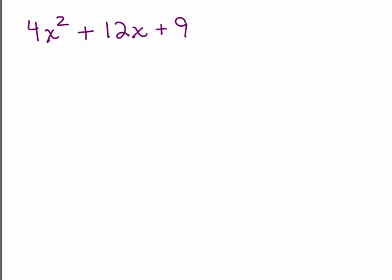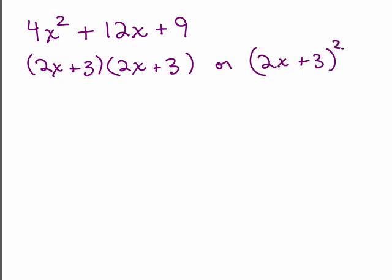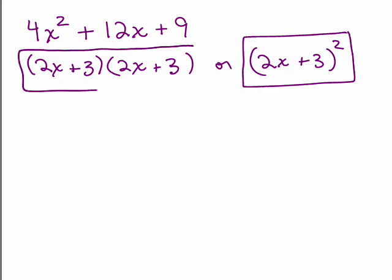Let's look at this example: 4x²+12x+9. You don't have to recognize that it's a perfect square — you could just go ahead and use trial factors. Somebody with trial factors might try 2x and 2x, try 9 and 1 — that doesn't work — then try 3 and 3, do the FOIL method, and say, 'Oh, that's the right answer.' When you're done, you can write the answer as (2x+3)², or 2x+3 times 2x+3. Remember, (2x+3)² is not the same as 4x²+9.